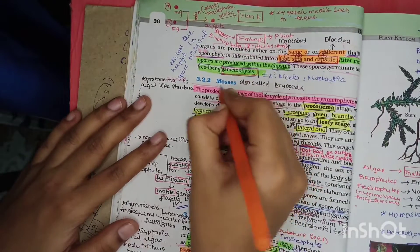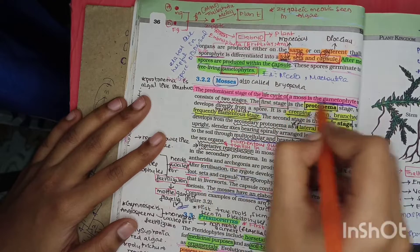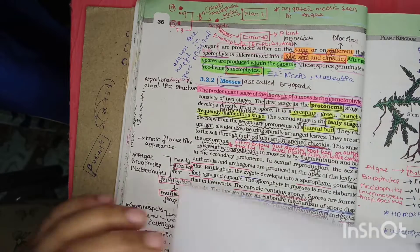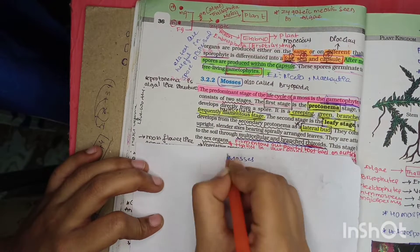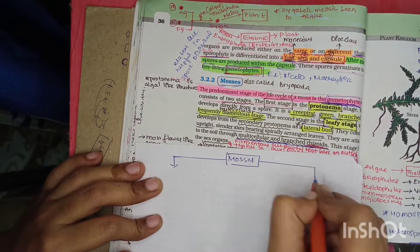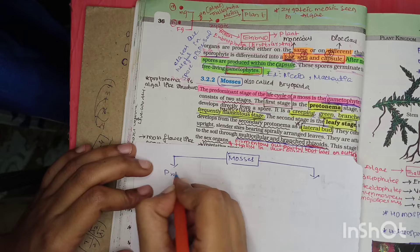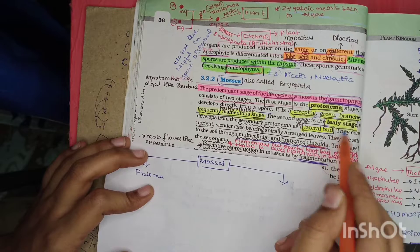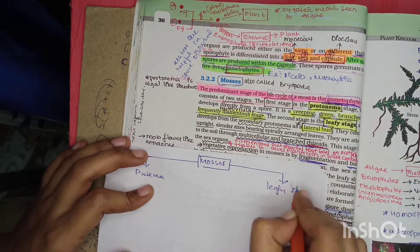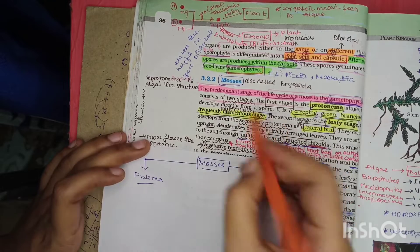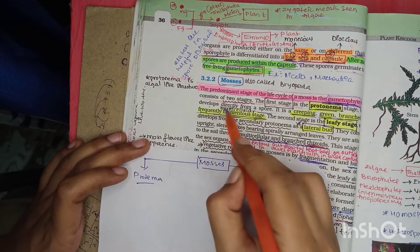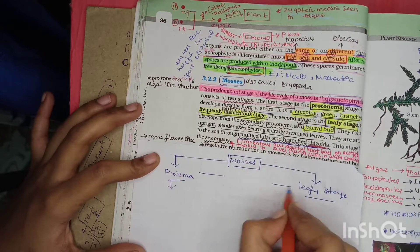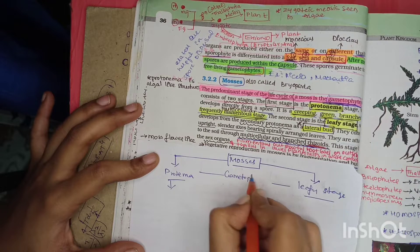The predominant stage of the life cycle of moss is the gametophyte. The gametophytic stage in mosses consists of two stages: the protonema stage and the leafy stage. The protonema stage develops directly from the spore.